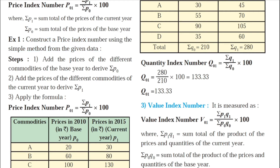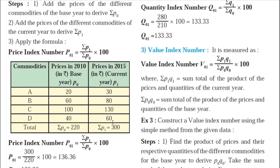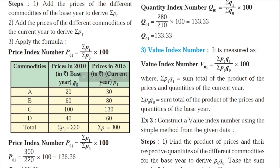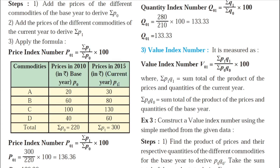The data has three columns: commodities, prices in 2010 (the base year, symbolized as P0), and prices in 2015 (the current year, symbolized as P1). The prices are: Commodity A — 20 in 2010, 30 in 2015; Commodity B — 60 and 80; Commodity C — 100 and 130; Commodity D — 40 and 60.